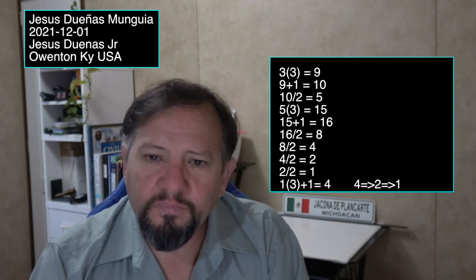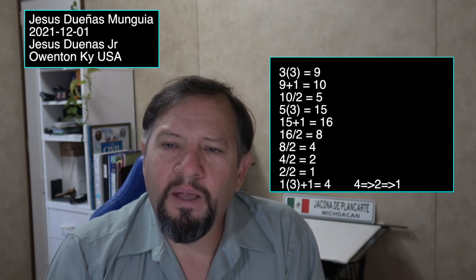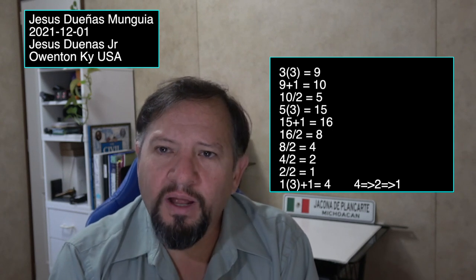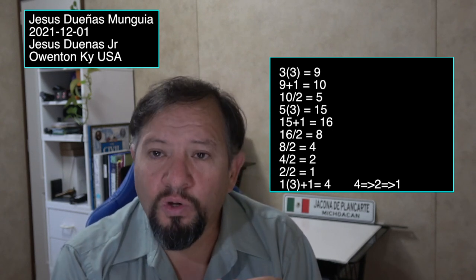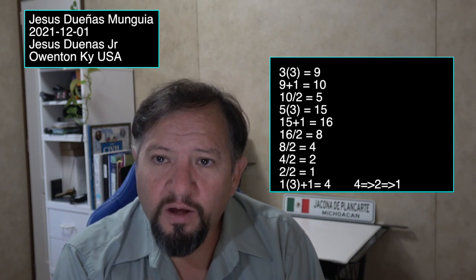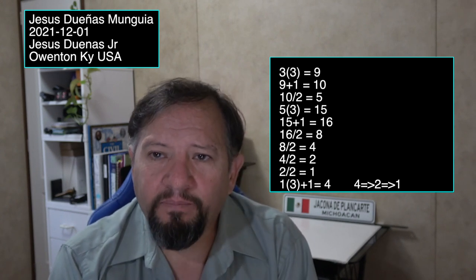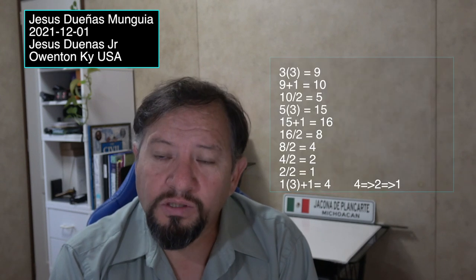To understand the Collatz conjecture, I'm going to break this video into three parts. First, I'll show you where the conjecture comes from — where the 3n plus 1 comes from. Second, I'll show you the laws that govern 3n plus 1. And at the end, once we understand where 3n plus 1 comes from and the laws, I'll show you the proof — and you'll see why it's so easy once you understand this.